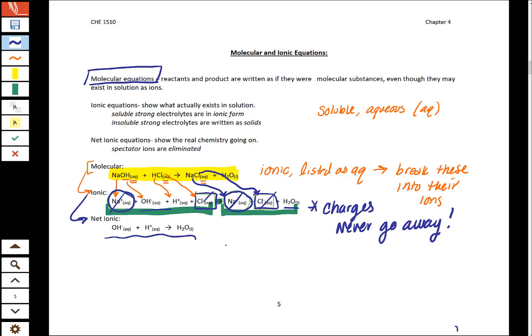These things that we're canceling out, these are called spectator ions. Like how when you go to a sporting event, you're sitting in the stands, you're just watching. Here's you at the sporting event, you have a sign that says, yay, go whoever. And you're just watching there, cheering them on, watching the real action happen, which is going on on the field. So your net ionic equation is showing the real action that's happening.